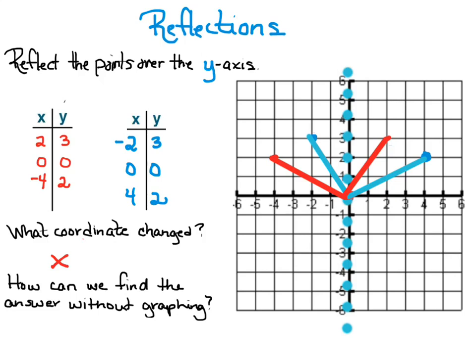I want you to make note of the fact that it was the y-axis that we folded on but it was the x coordinate that changed. So how can we find the answer without graphing? Always just simply negate the x value and that's how you would find the reflection point.